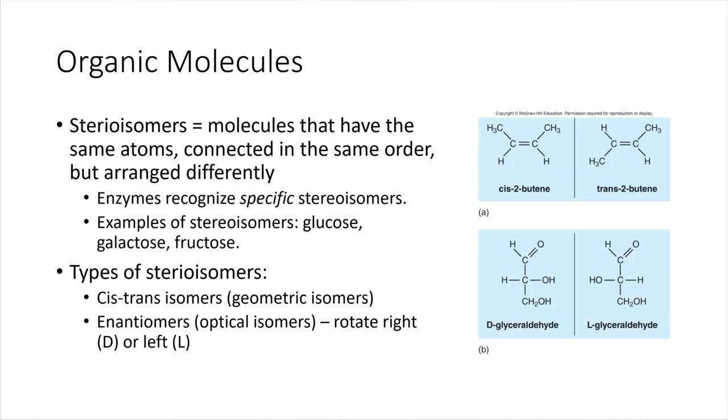Another thing about organic molecules is that they can come in different arrangements. When we talk about stereoisomers, this is a type of isomer that involves the same atoms connected together in the same order, but in three-dimensional space they're arranged differently. Some examples of that, if you look at the pictures over here.